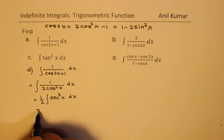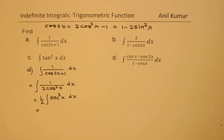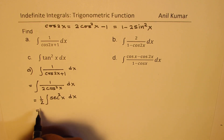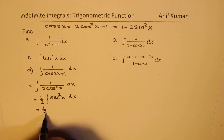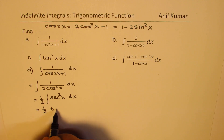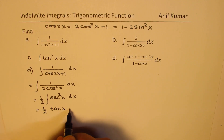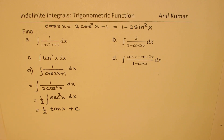That is the standard formula: the integral of secant squared x is tan x. So we get half of tan x plus c. That is how you get the result.